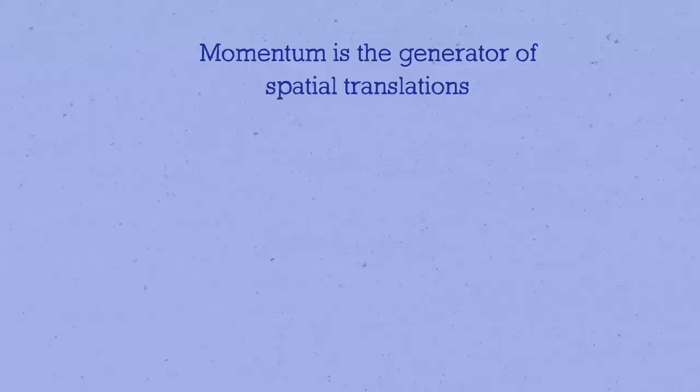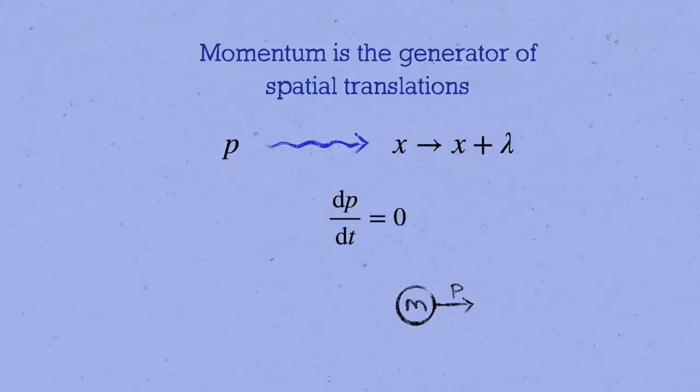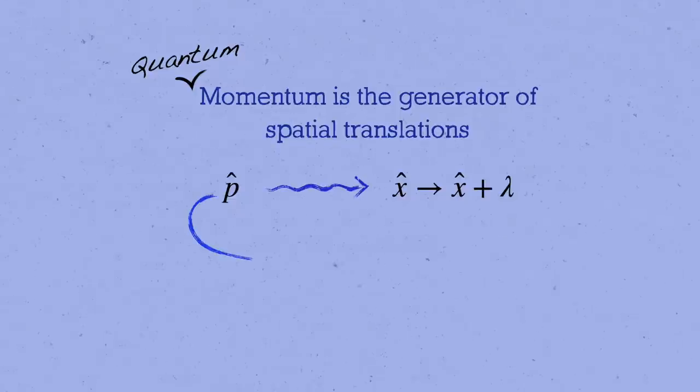What we showed is that in classical mechanics, the momentum defines a transformation that picks up our system and slides it over in space. And if this spatial translation is a symmetry, then the momentum is a conserved quantity. I'm going to explain the quantum version of that same statement in this video, and show you how it essentially defines what we mean by momentum in quantum mechanics, and leads inexorably to the canonical commutation relation.